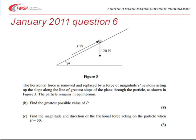In the second part of the question the horizontal force has been removed and we now have a force P acting up the slope. Since the particle remains in equilibrium, we're asked to find the greatest possible value of P, and then also to find the magnitude and direction of frictional force acting on the particle when P has a particular value equal to 30.